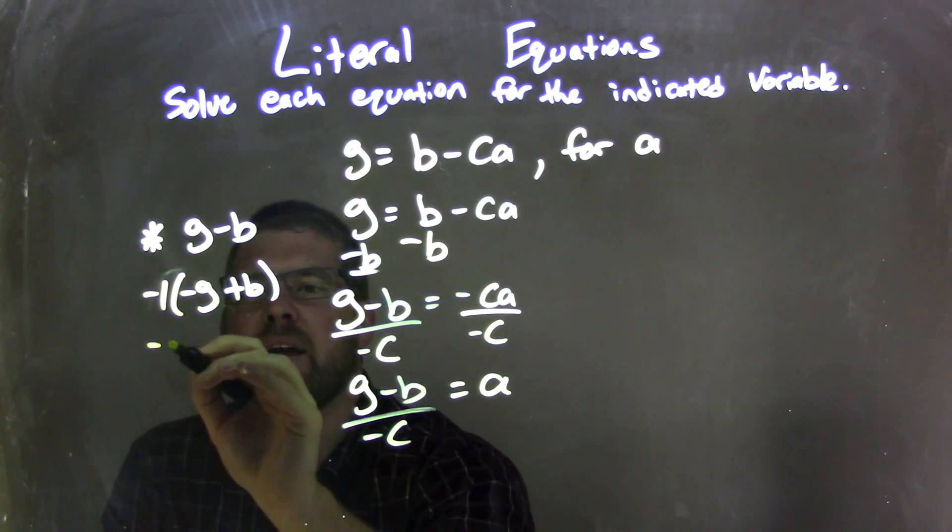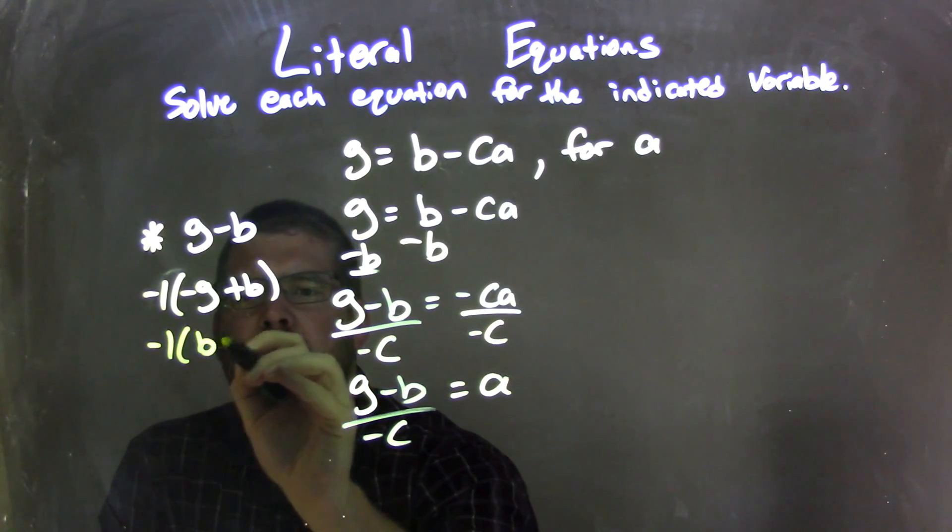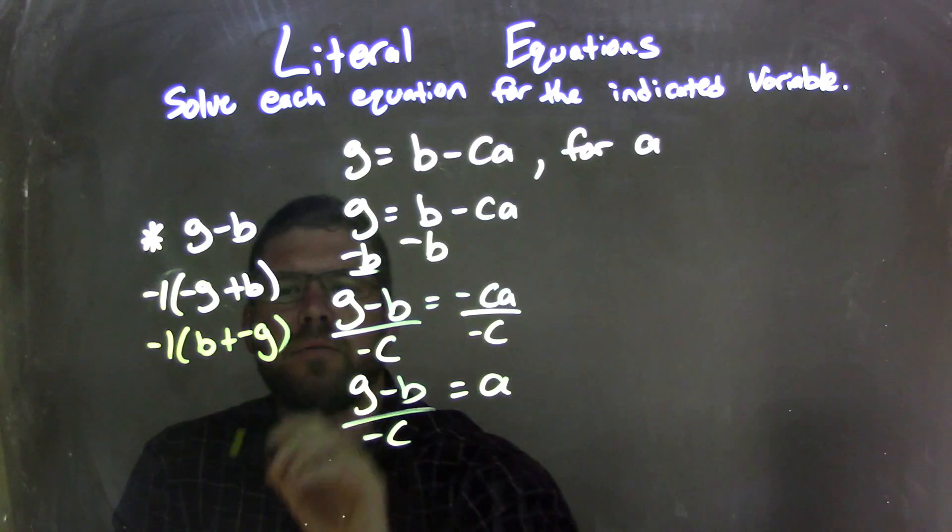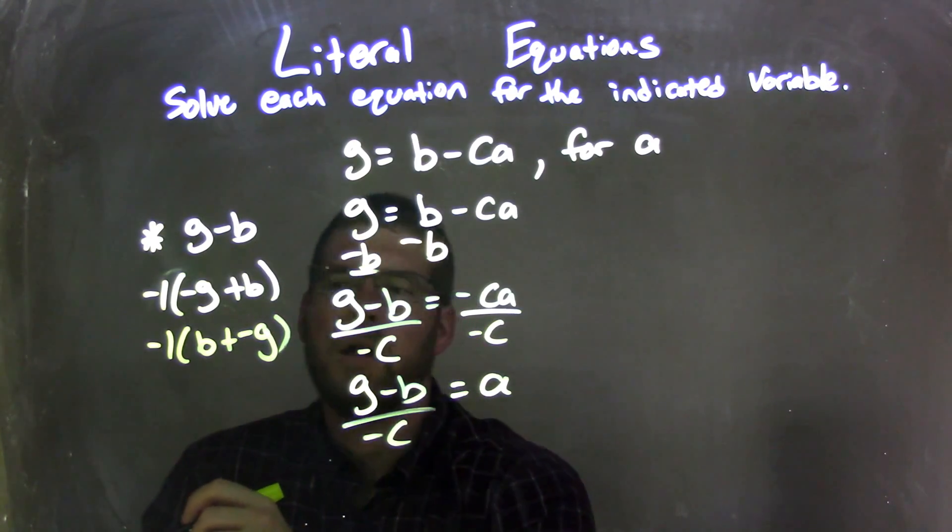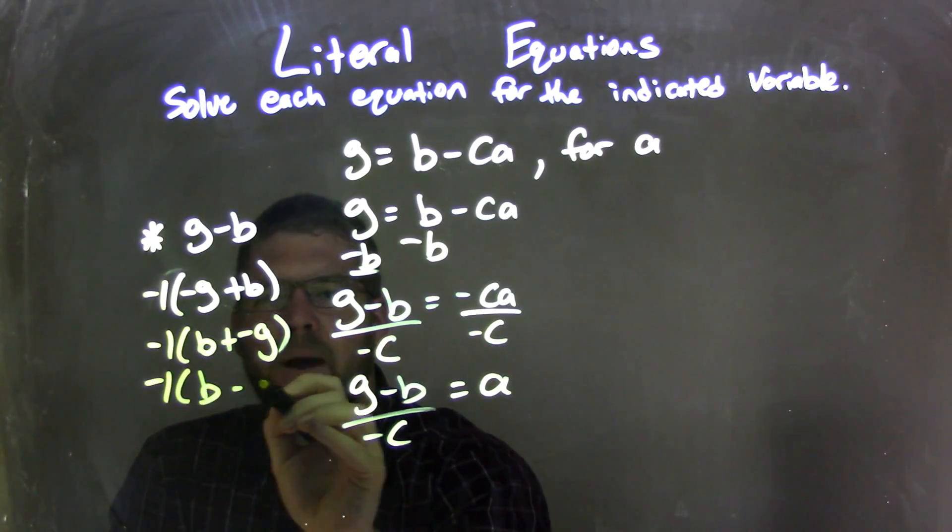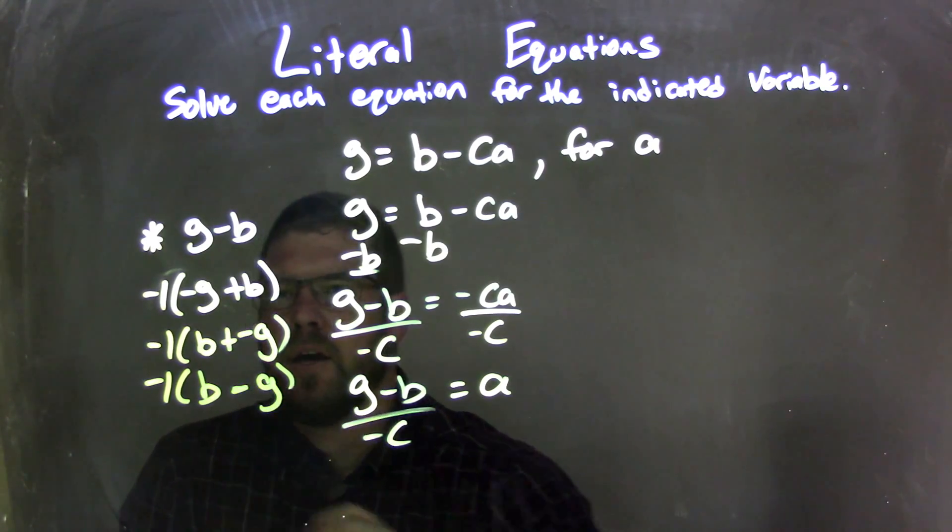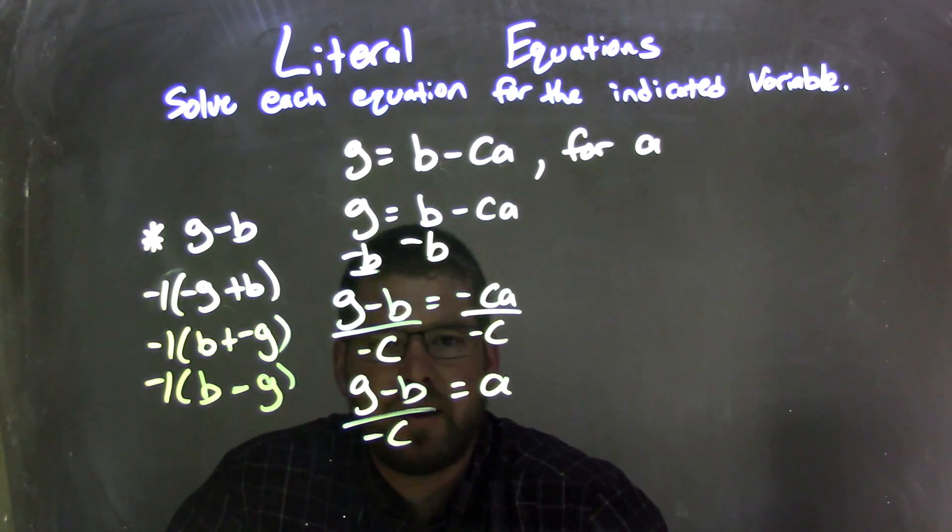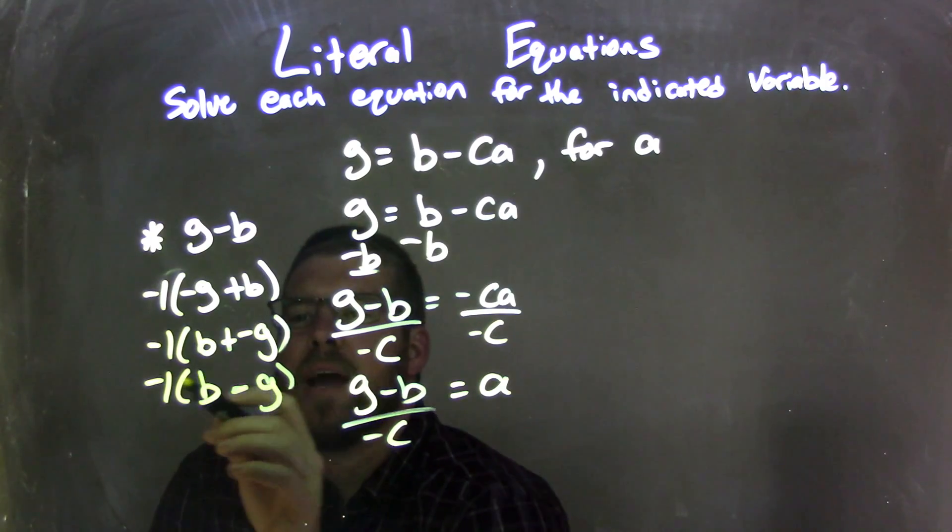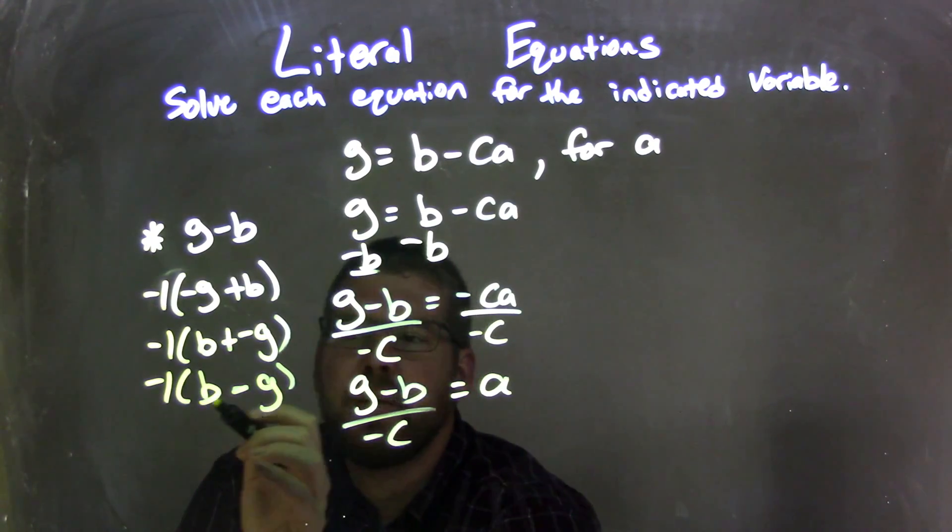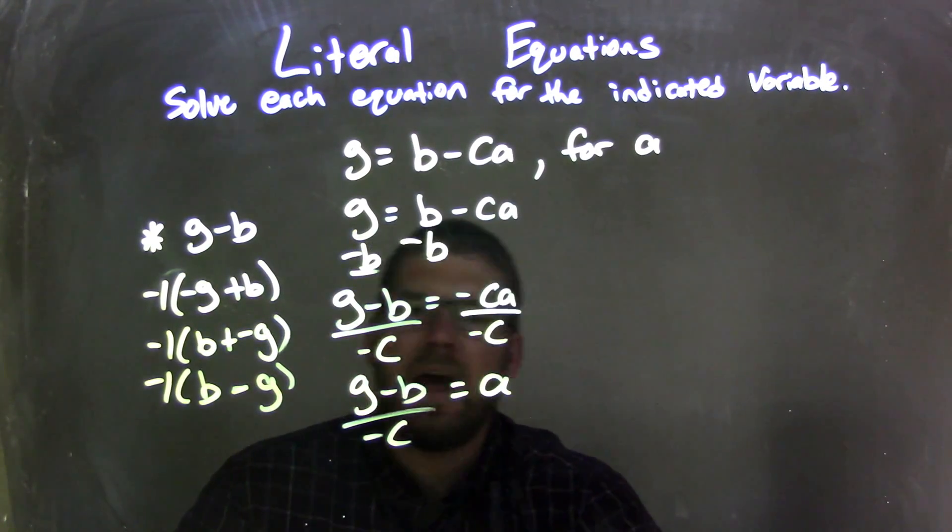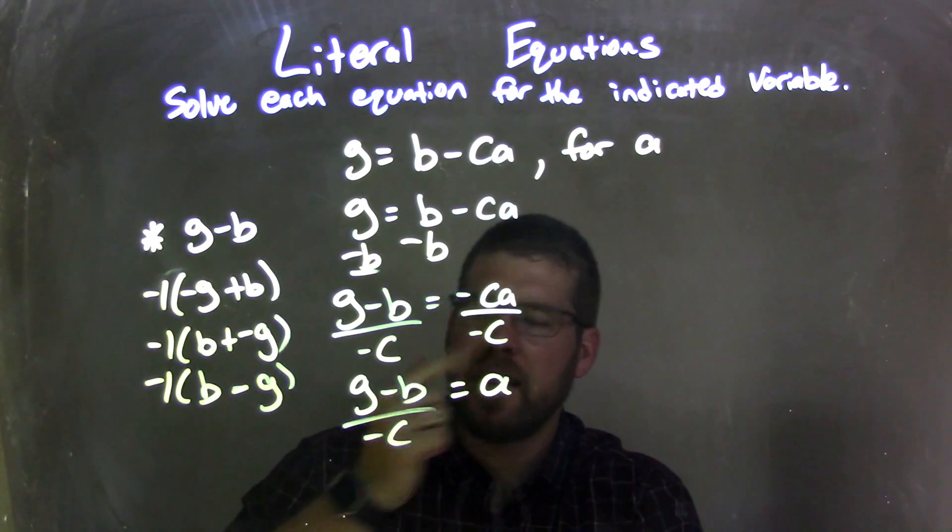Well, then I can rearrange this. I have negative one times B plus negative G. I can do that. Then I can even write that to be negative one times B minus G. It's the same thing. So now I have negative one times B minus G, which is the same thing as just G minus B up top. And this is a common technique to eliminate a negative in the denominator.